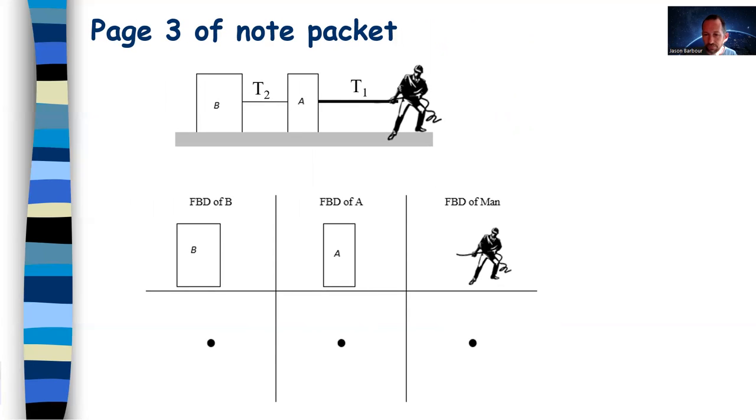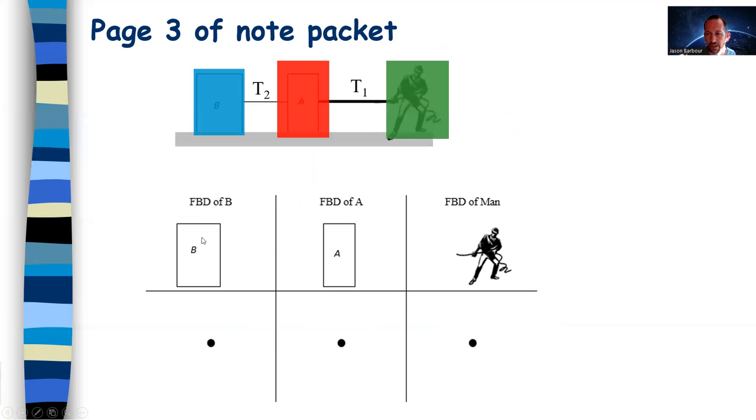On this one, we're just drawing free body diagram of object B. So block B or crate B has weight. There's a normal force from the floor pushing up. Let's just do all the vertical forces first. My colors, these colors don't make sense. Sorry about that. I should have used red for this one.